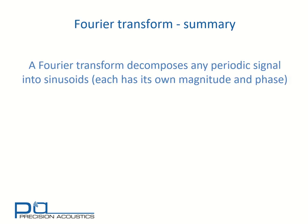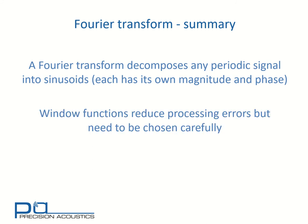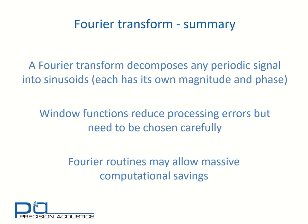In summary, a Fourier transform decomposes any periodic signal into sinusoids, each of which has its own magnitude and phase. Window functions reduce processing errors and need to be chosen carefully. Fourier transforms may allow massive computational savings, particularly when looking at convolution operations. We hope you found this interesting — come back and find more of the Precision Acoustics tutorial videos.